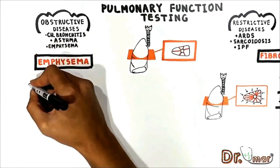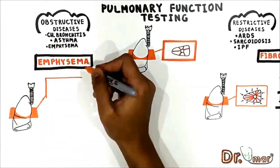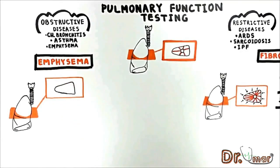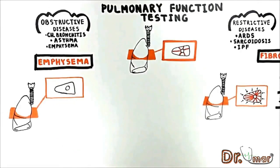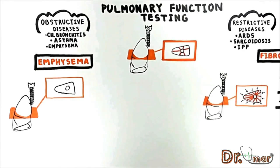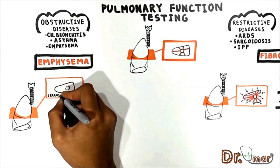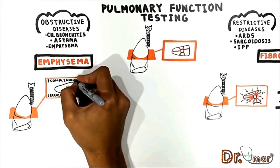In pulmonary emphysema we lose the elastic tissue of the lung parenchyma and alveolar septa. The airway is no longer tethered to the lung tissue. As a result of losing elastic tissue, recoil decreases whereas compliance increases. The lung will be very easy to stretch and expand, so such patients do not experience trouble with inspiration.